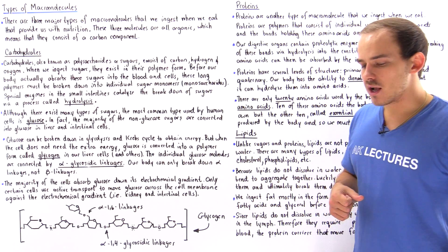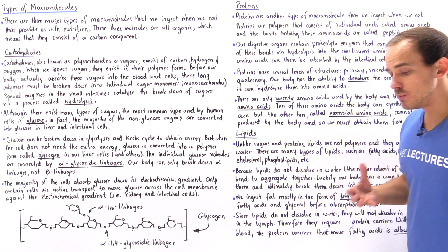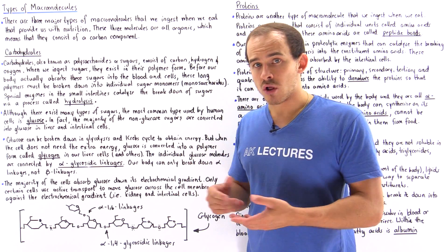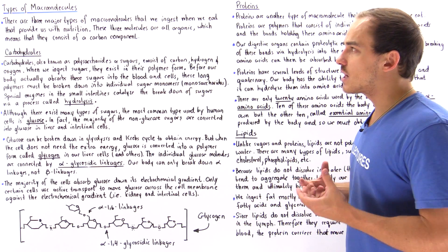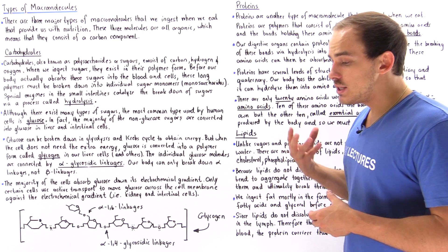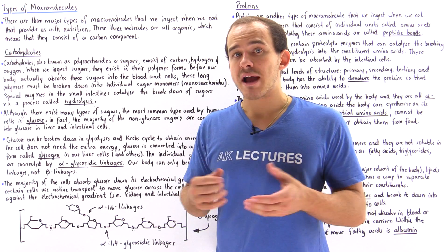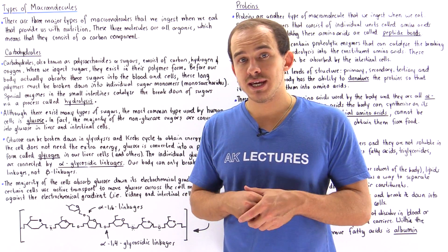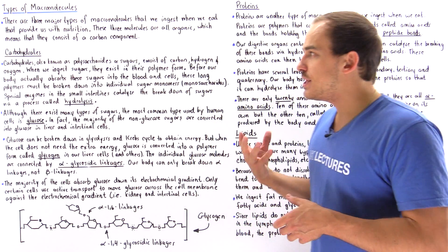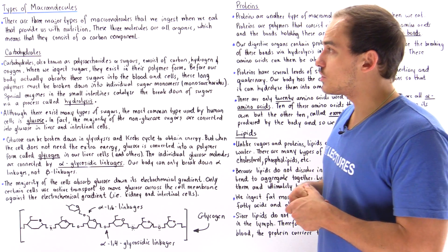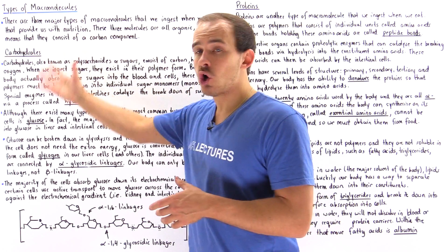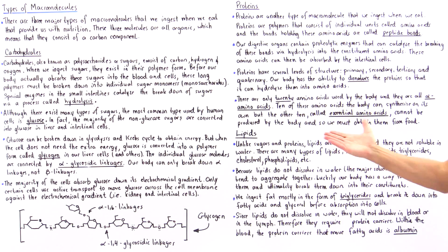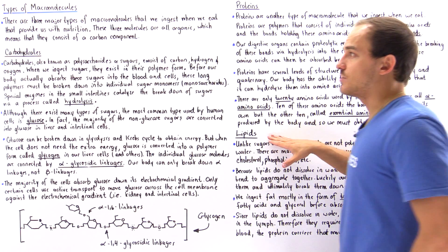Before we begin our discussion on the human digestive system, including the stomach, the small and large intestine, let's discuss the three different types of organic macromolecules that we ingest when we eat. These organic macromolecules include carbohydrates, proteins, as well as lipids, also known as fats.